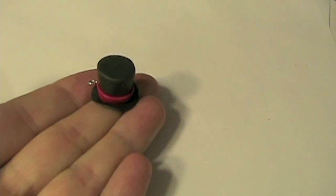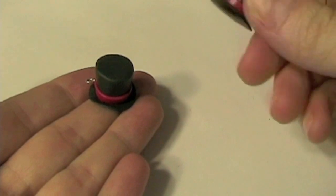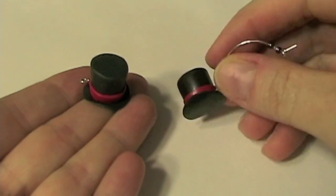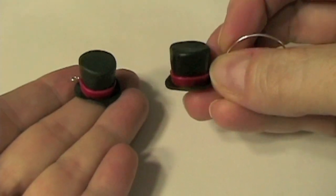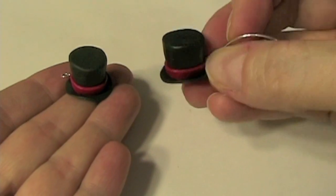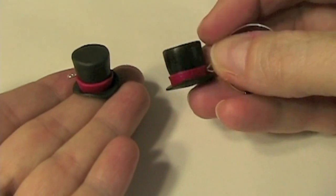And then when it comes out of the oven and it has cooled, use some of your clear coat so it'll give it a nice gloss so it looks like a fancy top hat.